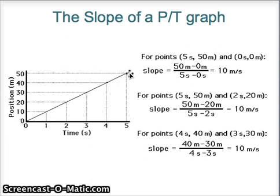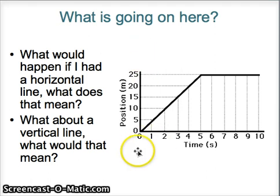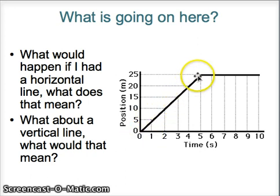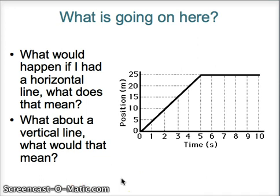Whenever there's a constant velocity, you have a straight line. What happens if the line is not straight? Looking at this graph, we still have a position-time graph. From the origin there's a straight line with a slope, and then another section that is perfectly horizontal. What does a horizontal line mean for an object that is moving? Go ahead and pause and answer that question.